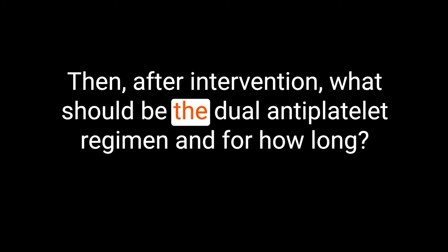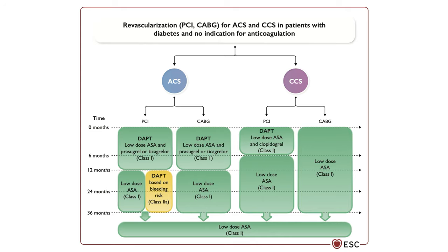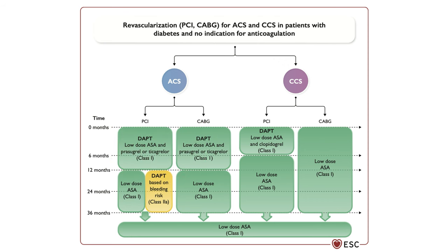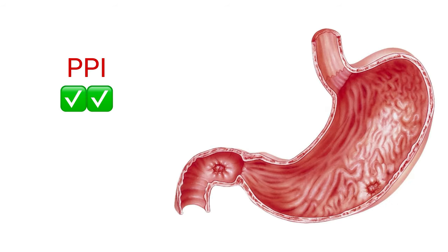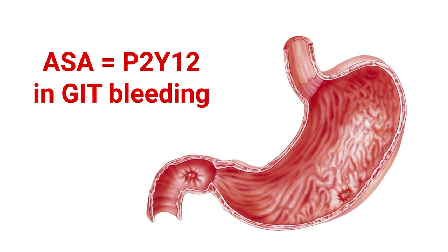After intervention, what should be the dual antiplatelet regimen and for how long? It's recommended to take dual antiplatelets for 12 months after an acute coronary syndrome. It's not recommended to shorten or reduce the dose of dual antiplatelet therapy below 12 months in patients with diabetes who have had an ACS. Even in patients with diabetes who tolerated dual antiplatelet therapy without major bleeding following a myocardial infarction in the past 1 to 3 years, we can extend dual antiplatelet therapy up to 3 years. There's no strong evidence supporting platelet function testing to adjust the duration of dual antiplatelet therapy in diabetes. Proton pump inhibitors would significantly reduce the risk of gastrointestinal bleeding in patients taking single or dual antiplatelet therapy. Low-dose aspirin and P2Y12 inhibitors have similar rates of gastrointestinal and non-gastrointestinal major bleeding.